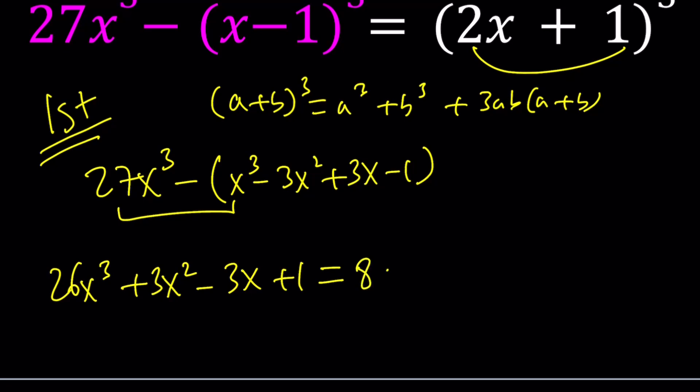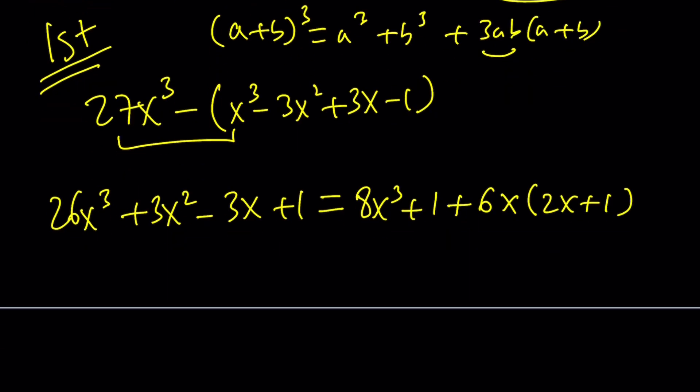So according to that, we're going to get 8x cubed plus 1, and then plus 3ab is just multiply those two terms together and multiply by 3, and then that's going to be multiplied by 2x plus 1. It's just a little easier to remember for me.